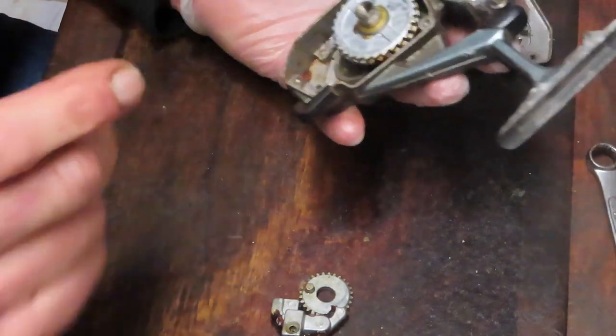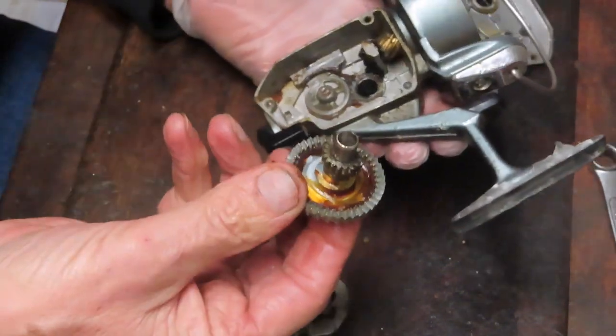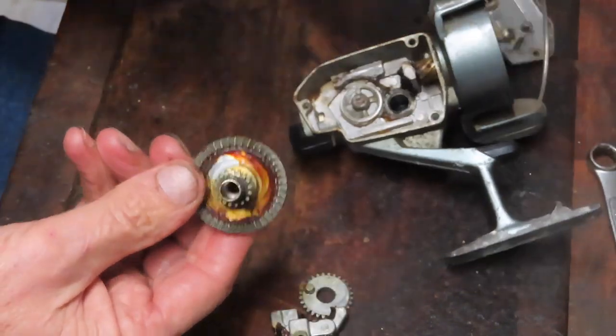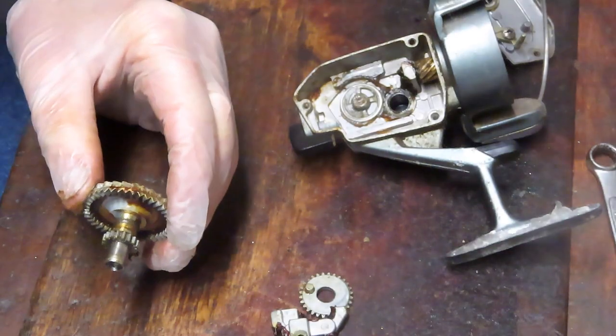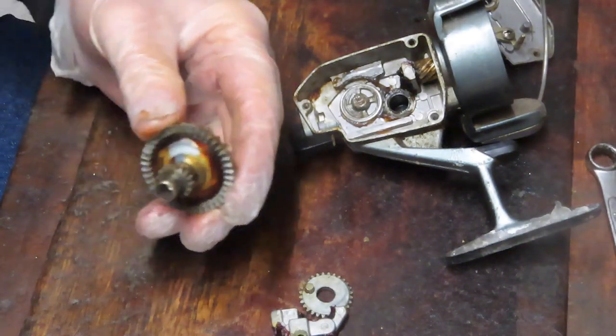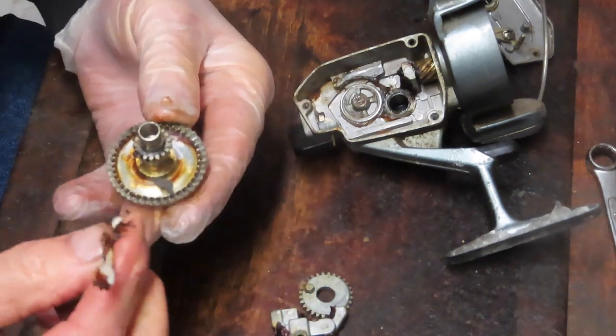When you take those two pieces out, the main gear can come out. You'll see all the dried grease on the back of this as well. A lot of what you're doing in terms of regular service or restoration is just getting that old chunky grease out and getting fresh coats of lubricants to help it perform better.